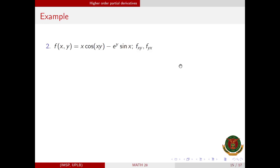For the next number, the function f(x, y) = x·cos(xy) − e^y·sin(x). We are asked to solve for f_xy and f_yx. Let us start with f_xy — the partial derivative of f with respect to x. As we can see, we have x times cos(xy), so we need to use the product rule, which says: left·(derivative of right) + right·(derivative of left).